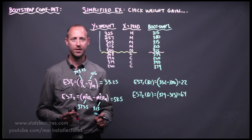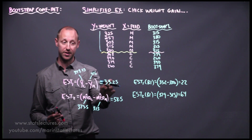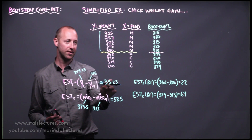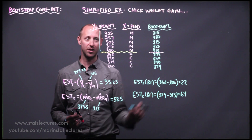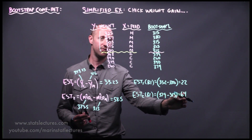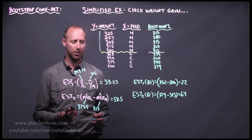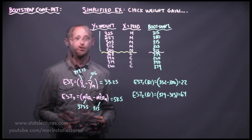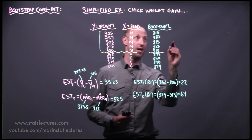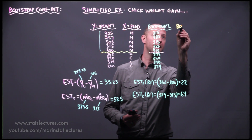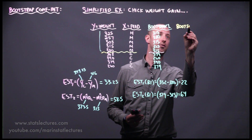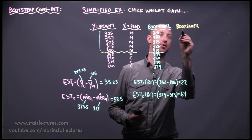We're already starting to see some variability in these estimates. With a different sample, the difference in means could be lower, and the difference in medians might be higher. A bootstrapping approach repeats this process multiple times — so let's look at bootstrap sample number two.